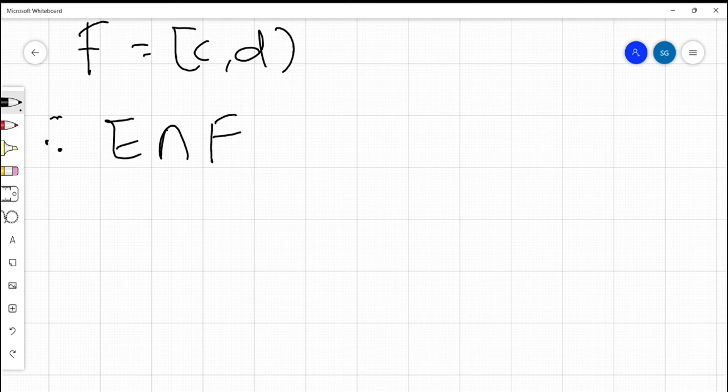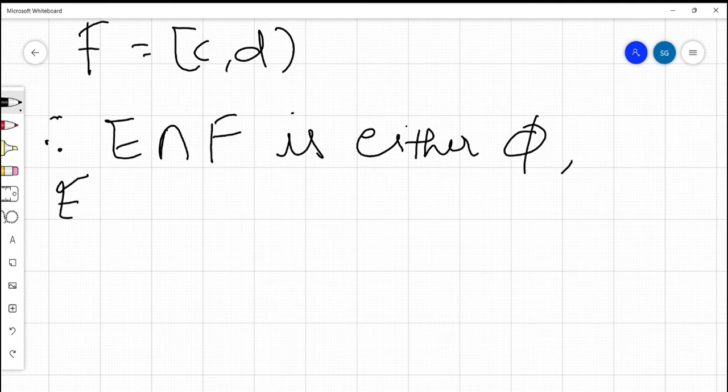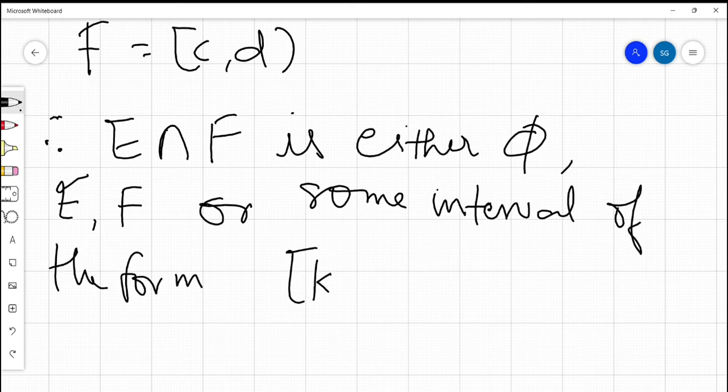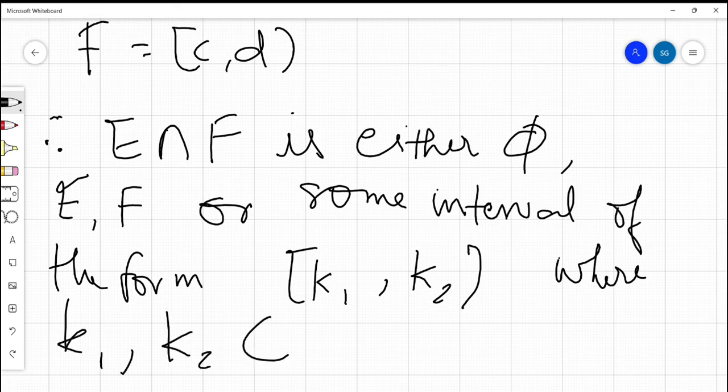Therefore, E intersection F is either phi, E, F, or some interval of the form [k1, k2) where k1 and k2 are real numbers. In all of these cases, E intersection F belongs to S, so S satisfies property 2 as well.